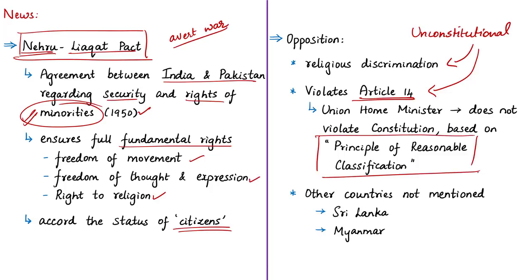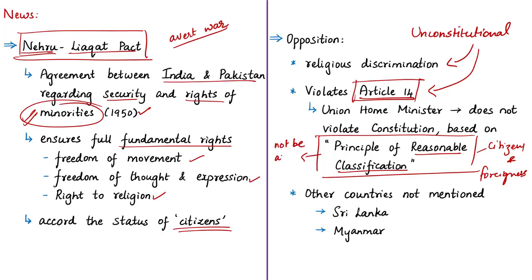The Home Minister argues the bill is based on the principle of reasonable classification under Article 14. Article 14 states that the state shall not deny equality before law or equal protection of laws to any person. While this applies to all persons — citizens or foreigners — the Supreme Court held that where equals and unequals are treated differently, Article 14 does not apply. Article 14 forbids class legislation but permits reasonable classification based on an intelligible differential and substantial distinction.